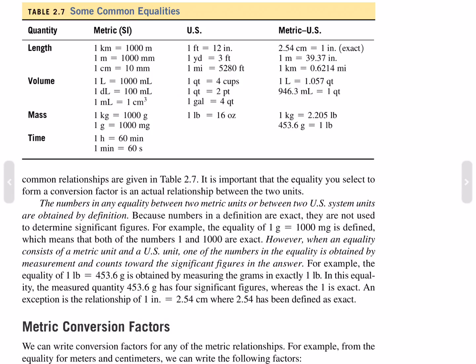However, when an equality consists of a metric unit and a US unit, one of the numbers is obtained by measurement and counts toward significant figures in the answer. For example, the equality of 1 pound equals 453.6 grams is obtained by measuring grams in exactly 1 pound. The measurement value 453.6 has 4 significant figures, whereas the 1 is exact. An exception is 1 inch equals 2.54 centimeters, where 2.54 has been defined as exact.